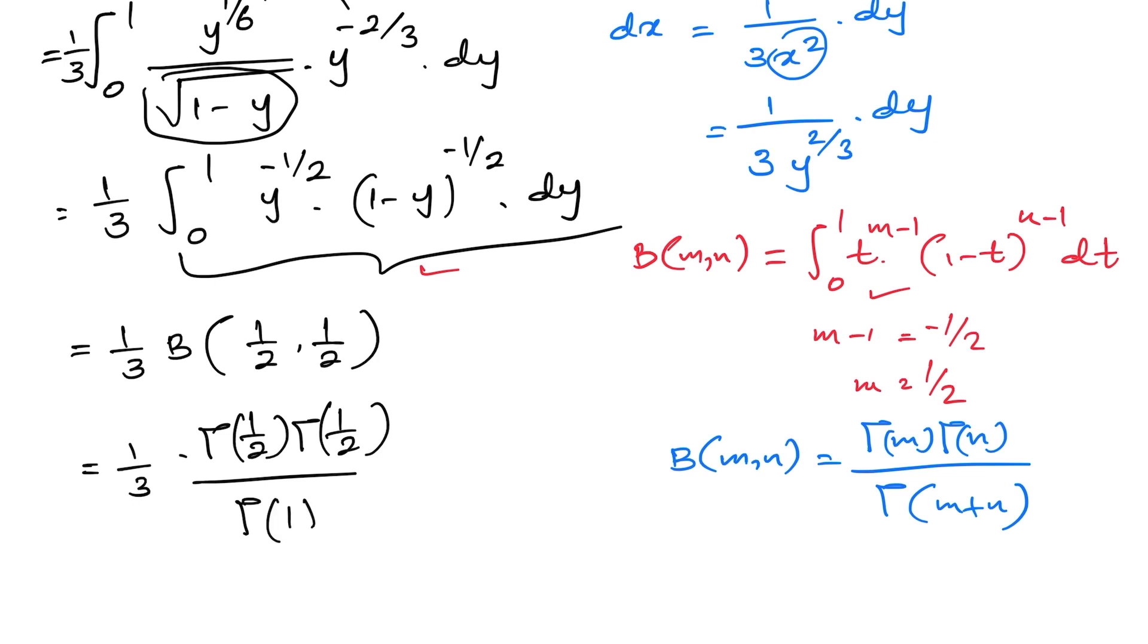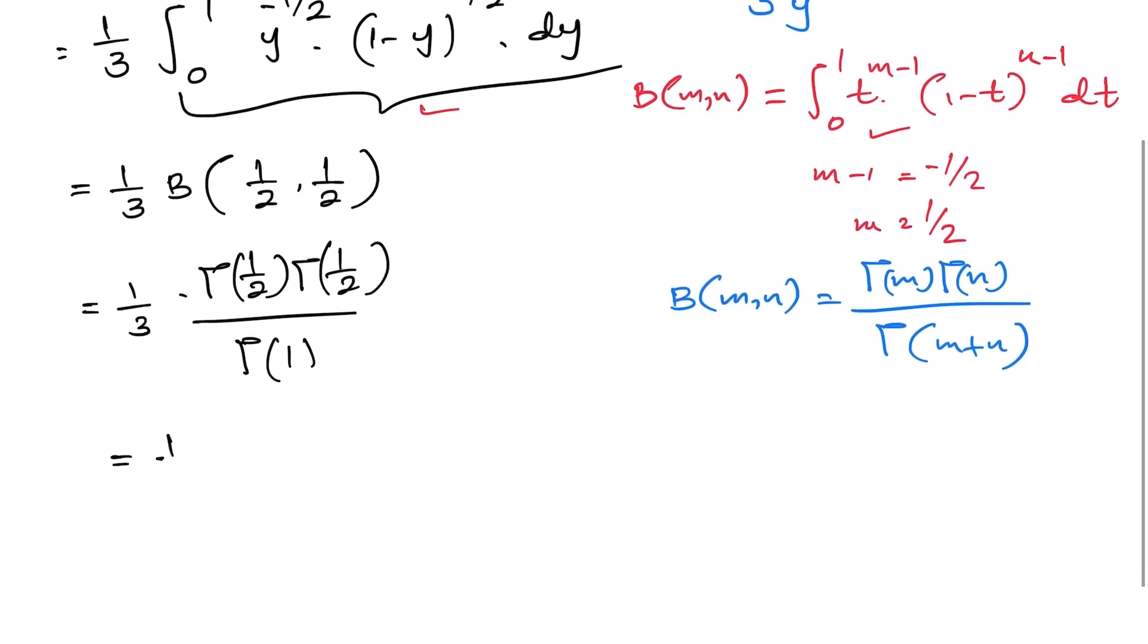Then, gamma of 1 half we know is square root of pi. Here we have 1 over 3. Gamma square of 1 half, 1 over 3. Gamma of 1 half is square root of pi, so we have here pi. The answer is pi over 3.